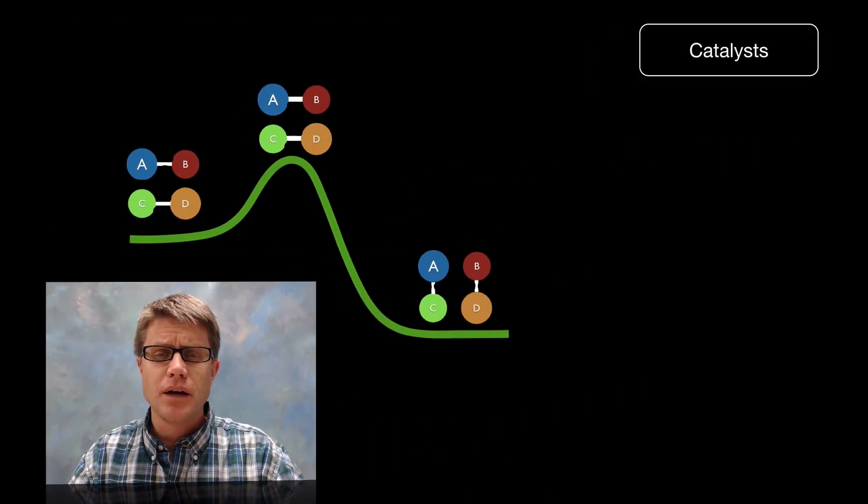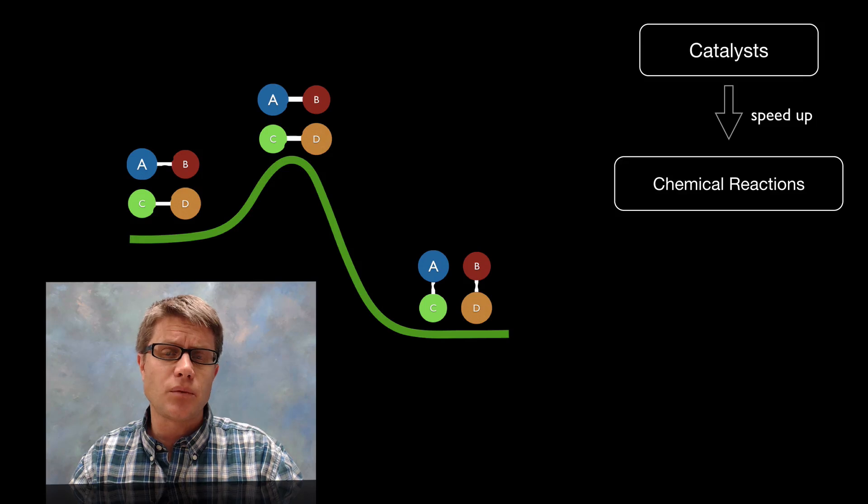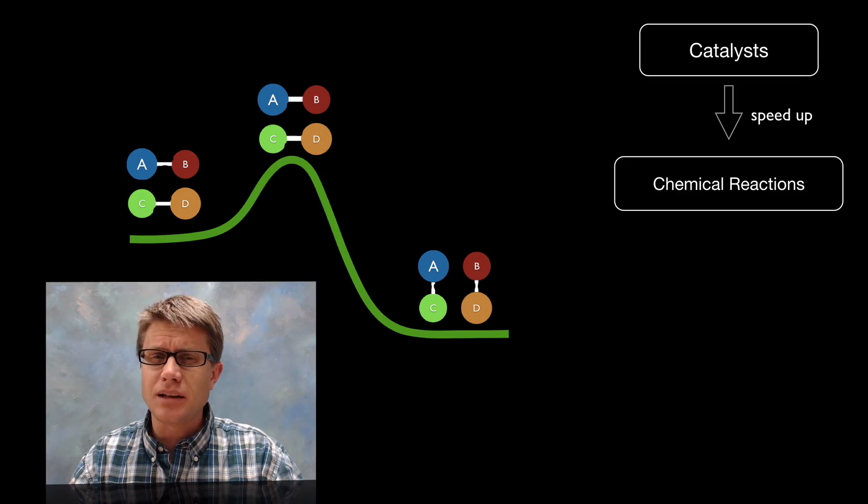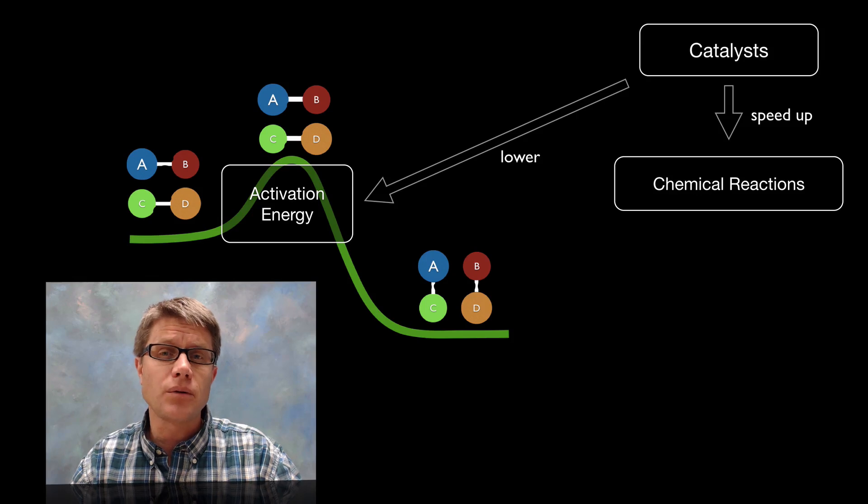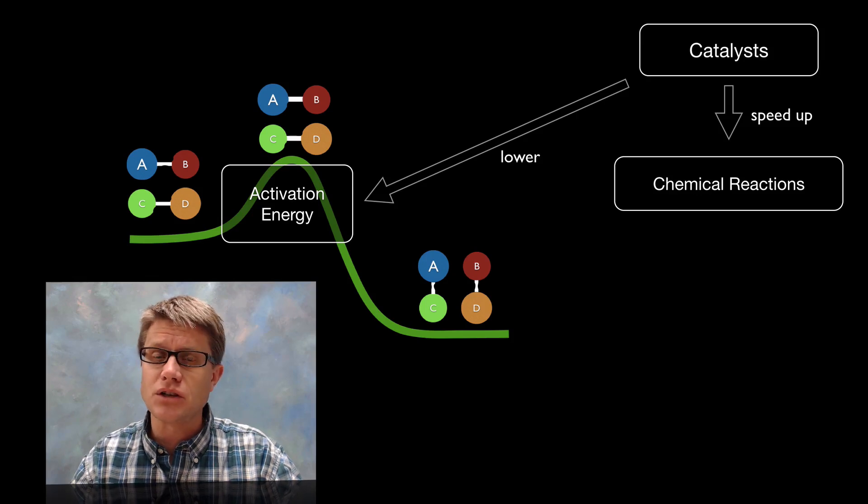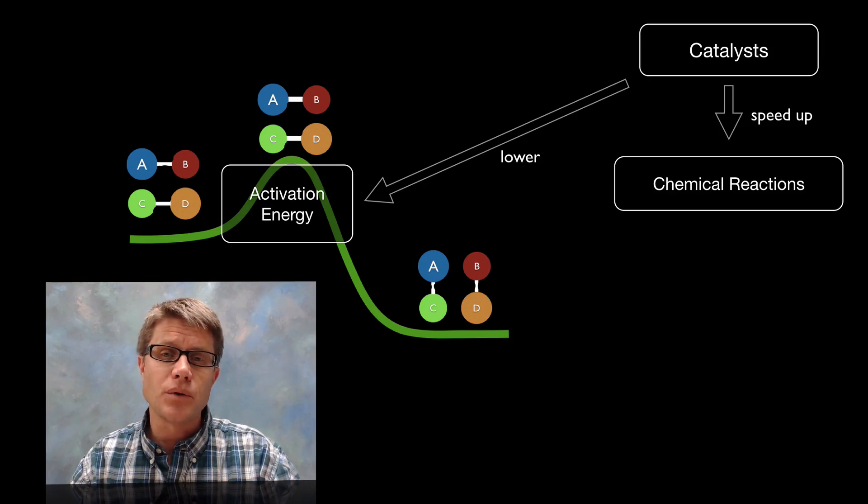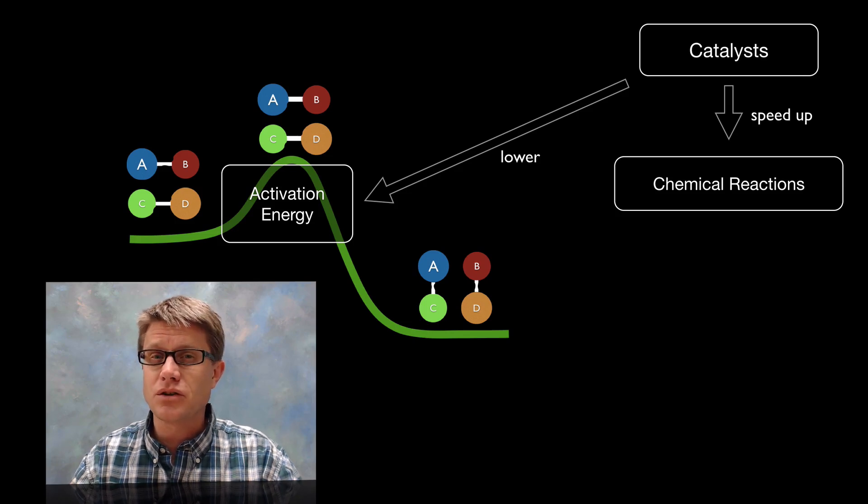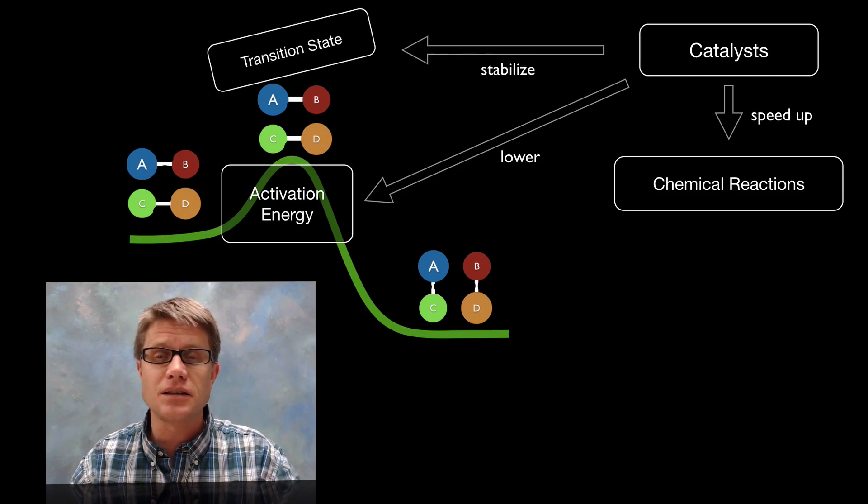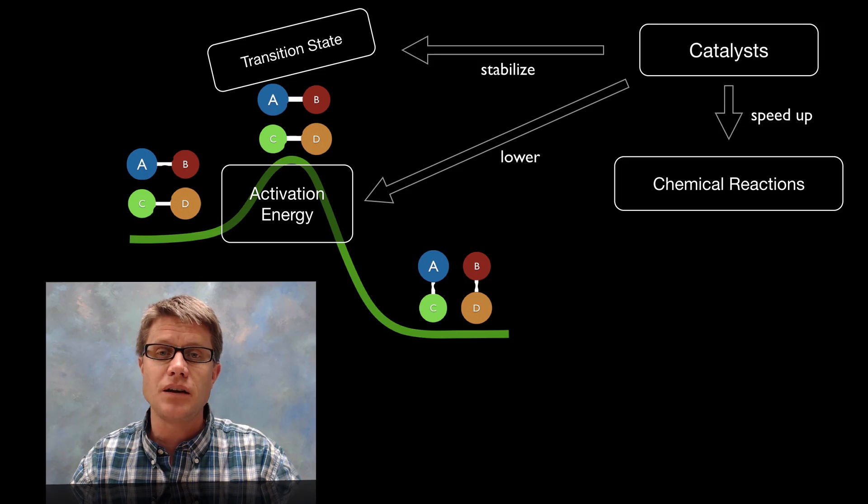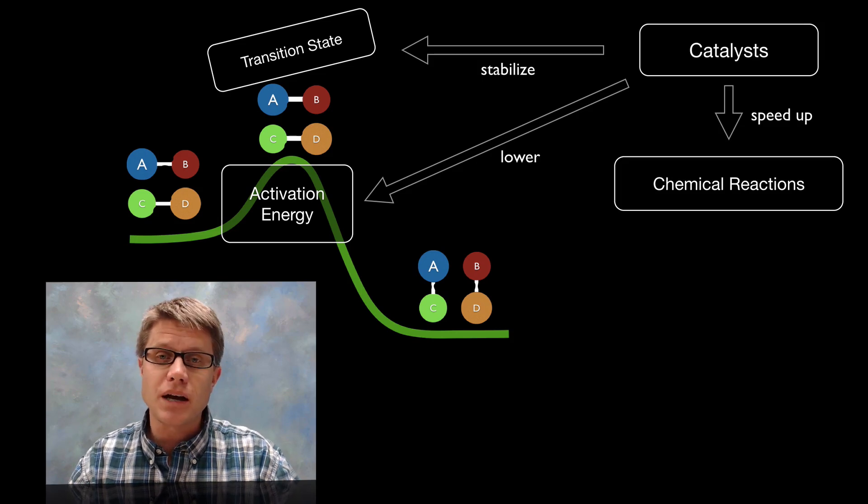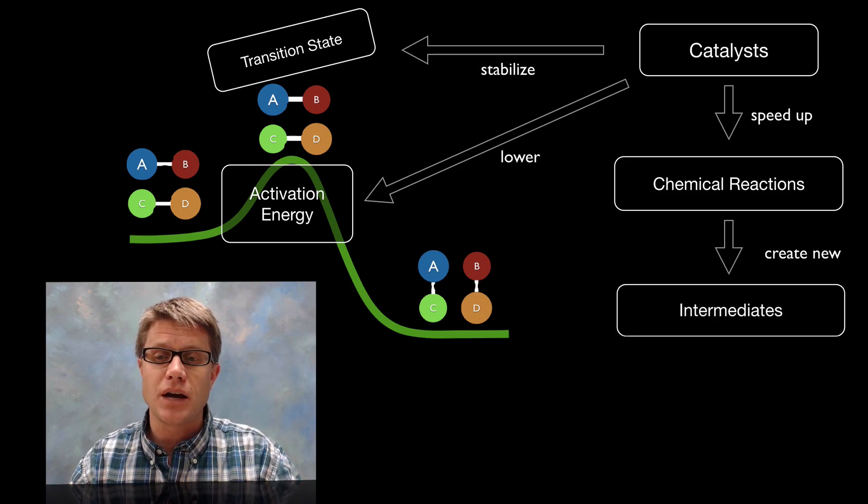But how do catalysts work? Well, essentially they speed up a reaction. Some catalysts actually slow down reactions, but in general they're going to speed it up by lowering the activation energy. The amount of energy we have to put in a system before we can stress those bonds, break them and form new bonds. And so it has to go through this transition state. But a catalyst can stabilize that transition state and therefore it can lower the activation energy and speed that reaction up.